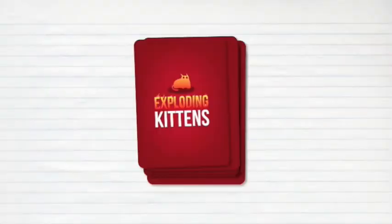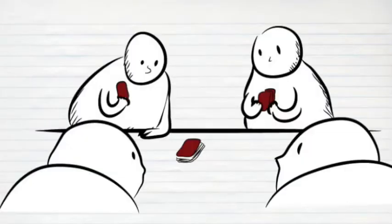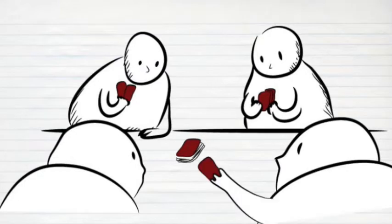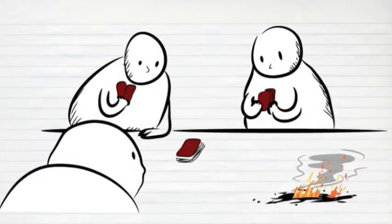Here's how the game works. You set our deck of cards face down and take turns drawing until one of you draws the Exploding Kitten card. Whoever draws the Exploding Kitten card explodes, they are dead, and they are out of the game.